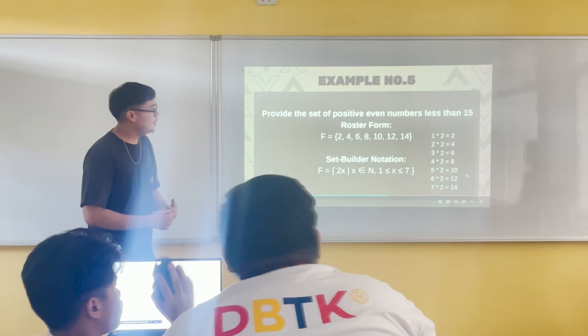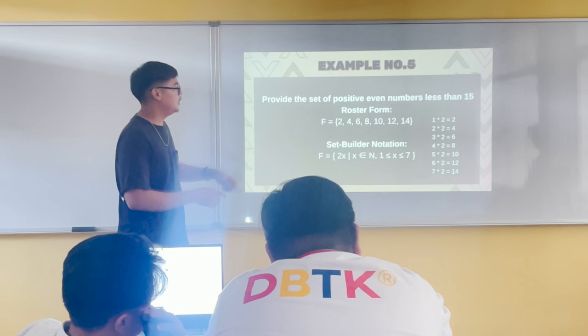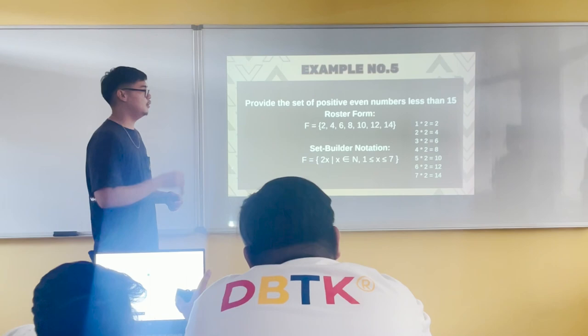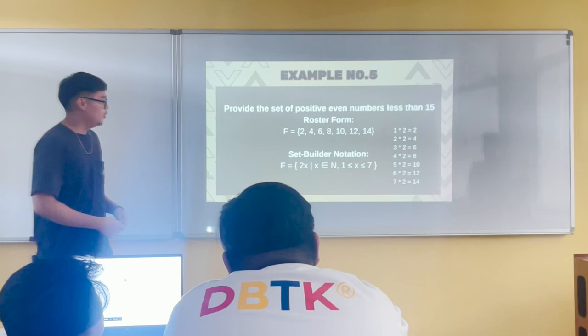Now, provide a set of positive even numbers less than 15. The elements of set F are: 2, 4, 6, 8, 10, 12, 14. We end at 14 because the condition is less than 15.